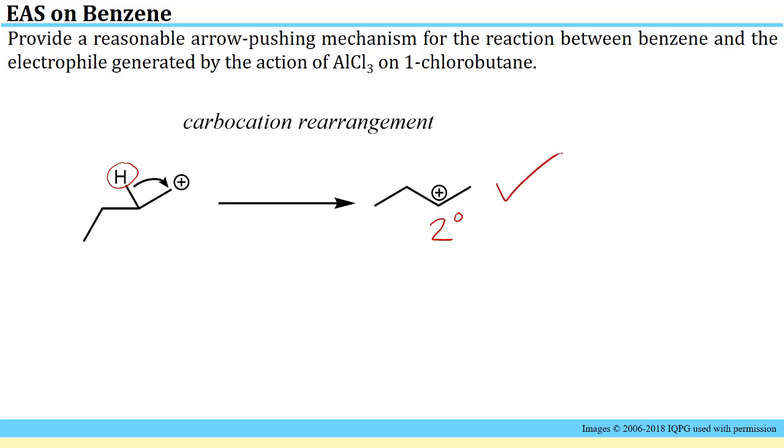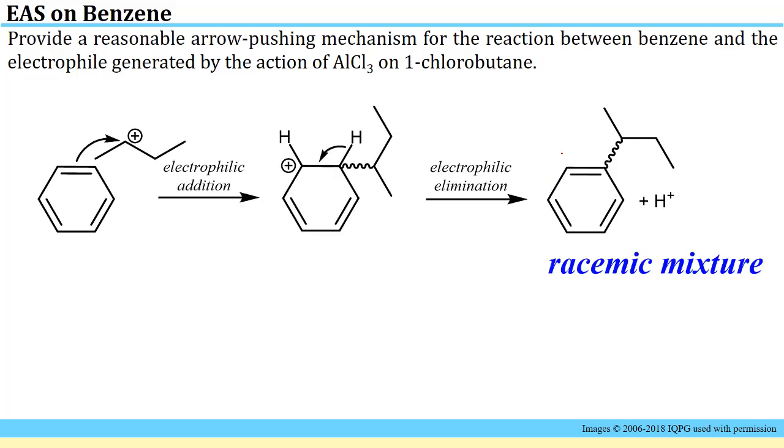Now we have the electrophile that we are able to use for an electrophilic aromatic substitution with the benzene. Like any electrophilic aromatic substitution reaction, you first have the electrophilic addition step, and when that happens you do generate a chiral center here so this would be racemic at this point. Then you have electrophilic elimination of this H, and your final product is a racemic mixture where you have a mixture of R and S isomers at that site.